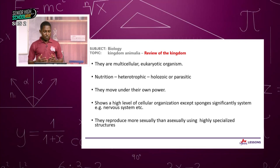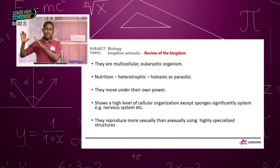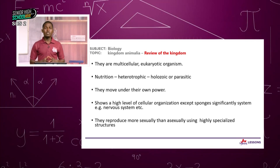They mostly reproduce sexually — as we go up the evolutionary tree to more complex organisms, most are reproducing sexually, involving gametes from two different parents fusing. Only a few at the lower level exhibit some amount of asexual reproductive methods.